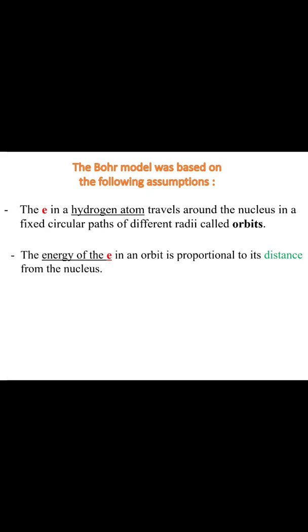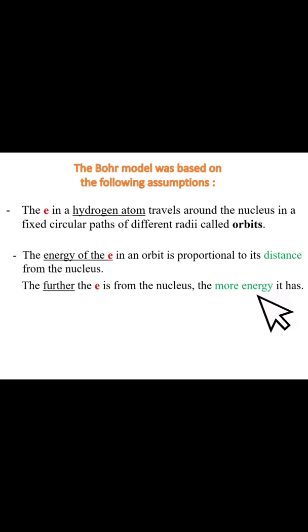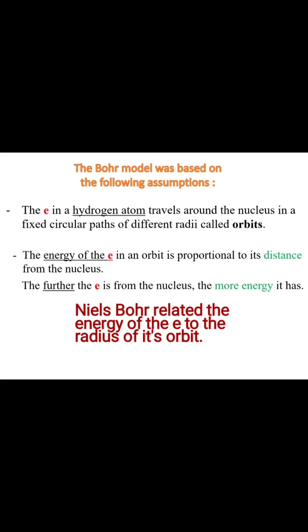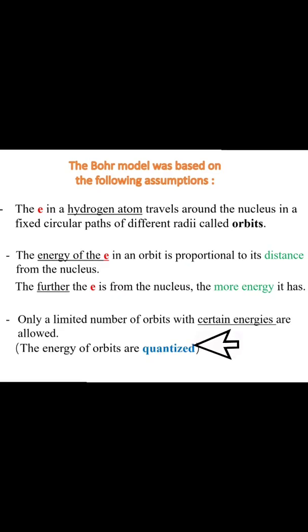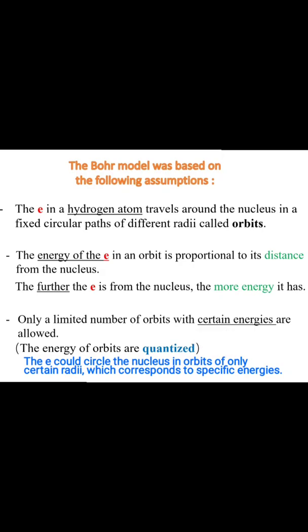Now let's look at the assumptions of the Bohr model. Firstly, the electron in a hydrogen atom travels around the nucleus in a fixed circular path of different radii, which we call orbits. According to the Bohr model, the energy of the electron in an orbit is proportional to its distance from the nucleus — the further the electron is from the nucleus, the more energy it has. Only a limited number of orbits with certain energies are allowed, meaning the energy of orbits is quantized.